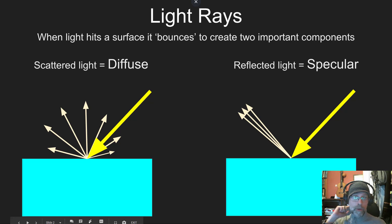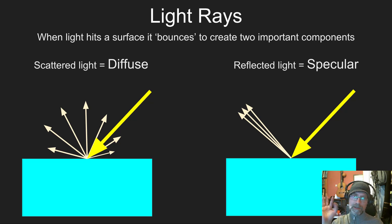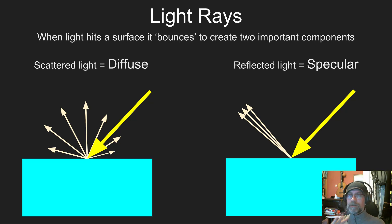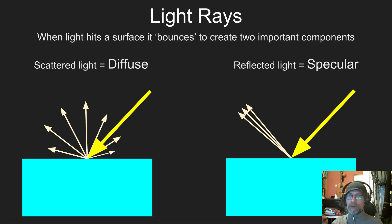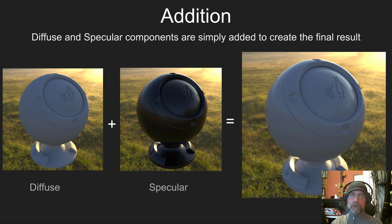Firstly, you need to know about light rays. Light rays are emitted by lights in our scene and thrown around until they hit surfaces. When they hit a surface, they bounce to create two important components: scattered light, which we call diffuse, and reflected light, which we call specular. The final result — what we see — is just a matter of addition: diffuse plus specular equals the final result.